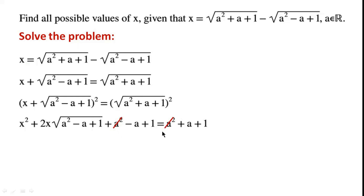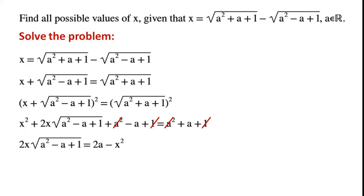The a squared terms on both sides cancel, and the 1 terms on both sides also cancel. By simplifying, we can write 2x times the square root of a squared minus a plus 1 equals 2a minus x squared.